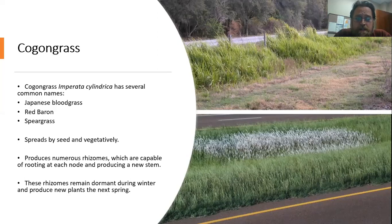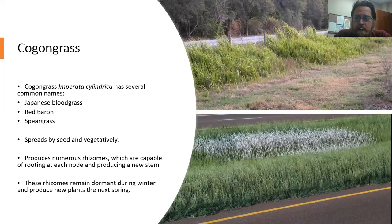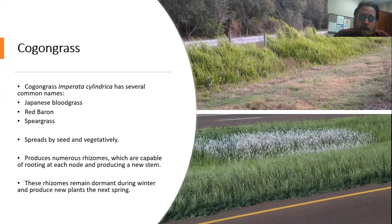Cogongrass can spread both by seed and vegetatively. It produces a lot of rhizomes — stems that grow right along the ground or just underneath the soil. Each rhizome is capable of rooting at every individual node, essentially producing a whole new infestation, which makes it very easy to spread. While those rhizomes are dormant during winter, once spring comes along they will grow and produce new plants.